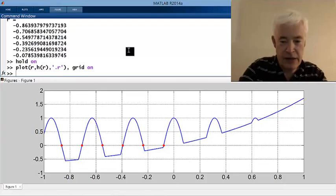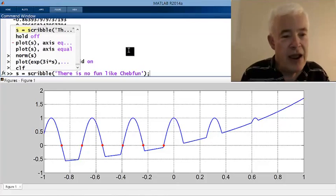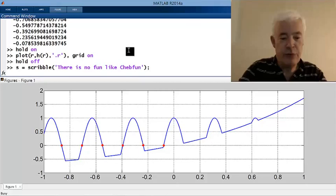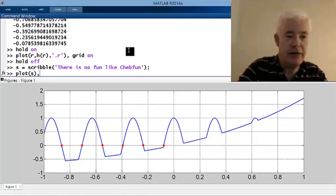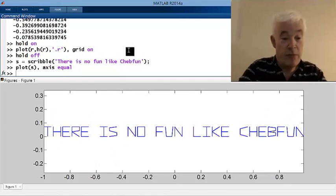Let's do one final thing to say goodbye. I'll say hold off again, and I'll say s equals scribble. There is no fun like ChebFun. Now, I'm not really going to explain what this is, but let's plot the result. I'll plot x with axis equal, and you can see this heartwarming message.